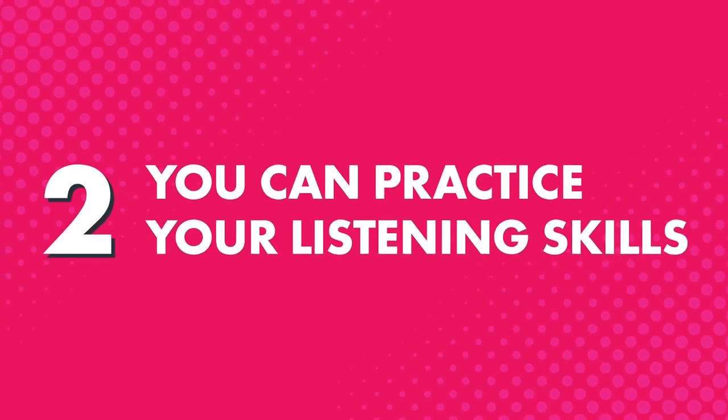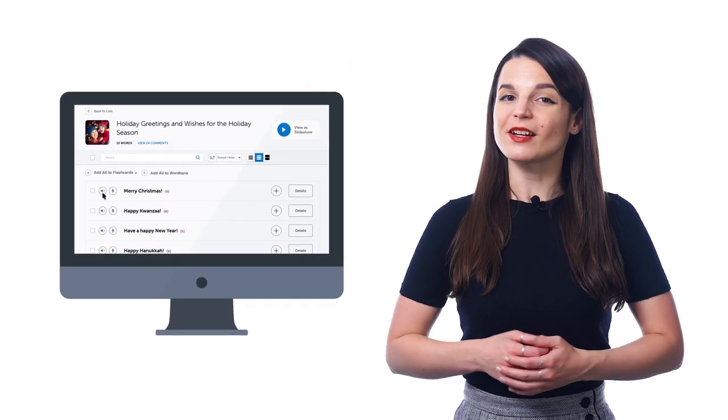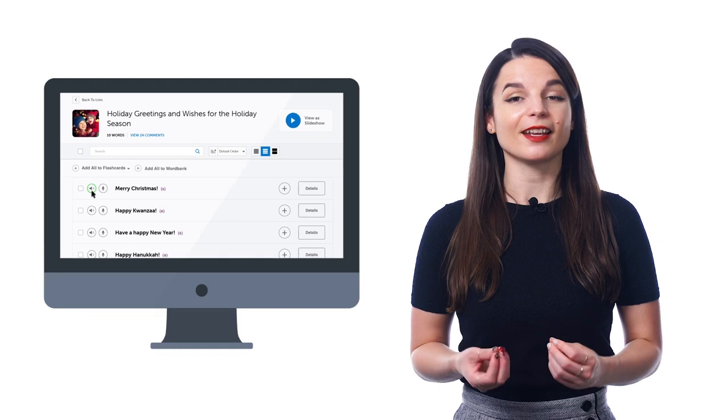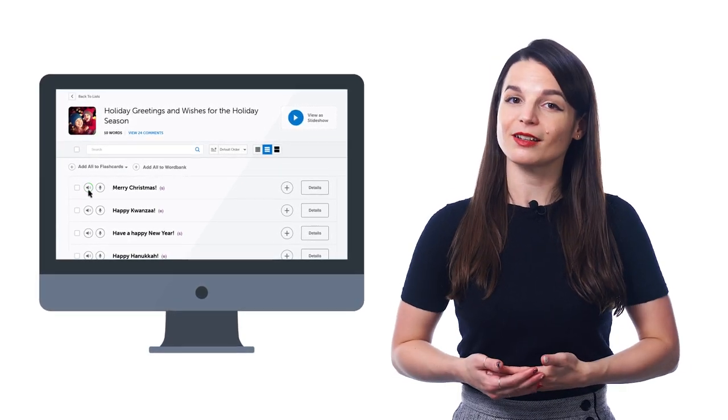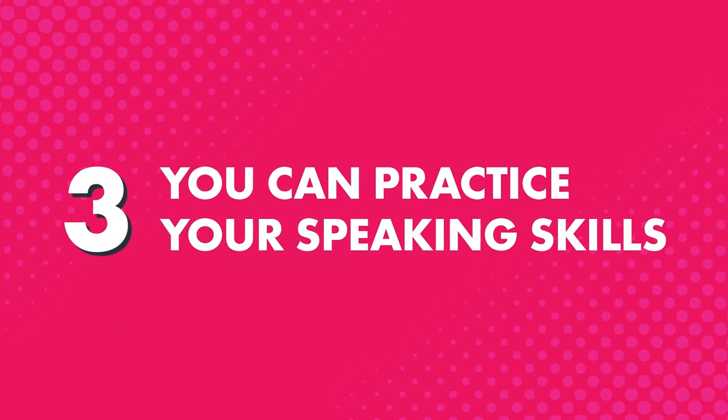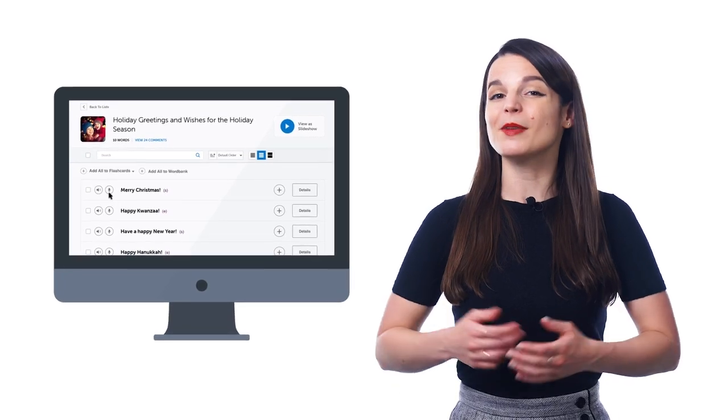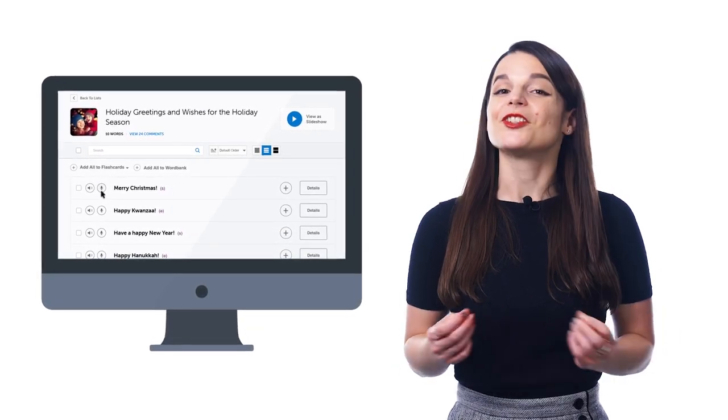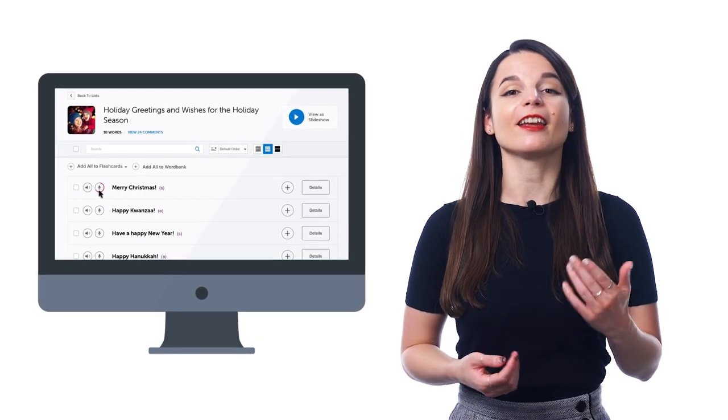Second, you can practice your listening skills by hearing the words at both native speed and at the slower half speed. Just click on the speaker icon next to each word to hear it at normal speed, and click a second time to hear the word at half speed, and you'll easily start understanding the word anytime you hear it. Third, you can practice your speaking skills with the voice recorder, a premium feature inside the vocabulary lists. Just click on the microphone icon to record yourself saying the word or phrase. You can also listen to the native pronunciation and your own pronunciation side by side. That way, you can instantly hear how close you are to the native speaker and how to improve.